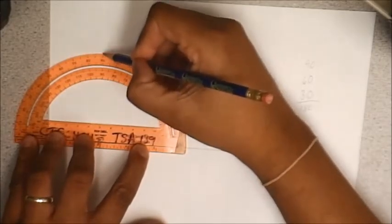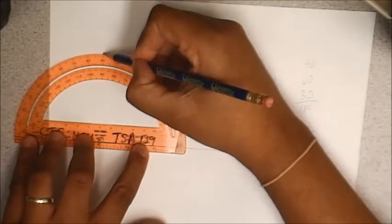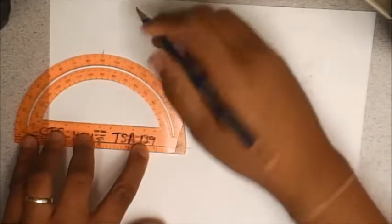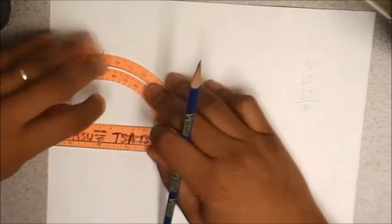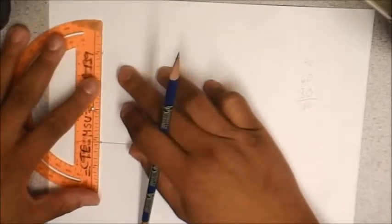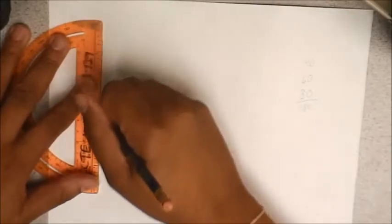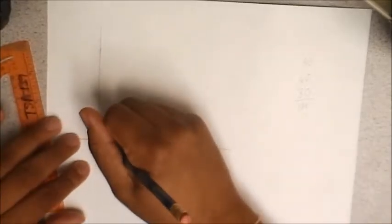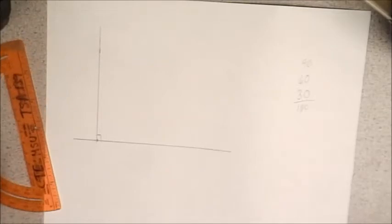And so here is 90 degrees. There is 90. And then what I am going to do is now I am going to play connect the dots. I am going to connect both of those lines. So that is my 90 degree angle.